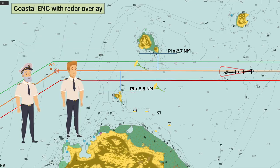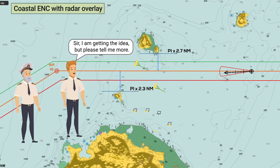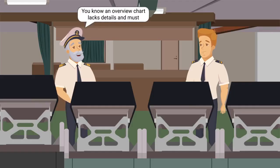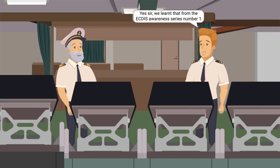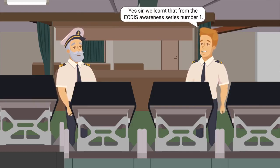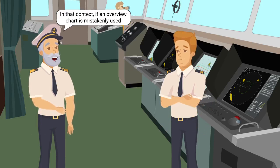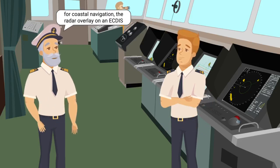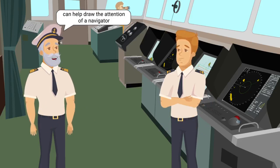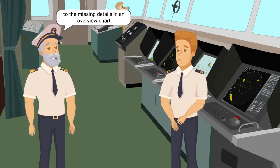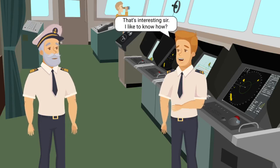Yes sir, but do you know it is also very useful to confirm the coastlines, islands, buoys, and similar objects on any ENC? Sir, I am getting the idea, but please tell me more. You know an overview chart lacks details and must never be used for coastal navigation. Yes sir, we learnt that from the ECDIS Awareness Series number one. In that context, if an overview chart is mistakenly used for coastal navigation, the radar overlay on an ECDIS can help draw the attention of a navigator to the missing details in an overview chart.